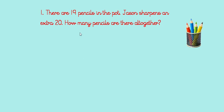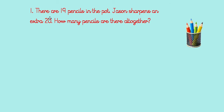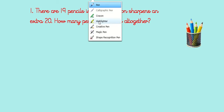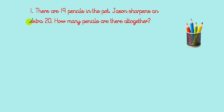I hope you found that all right. Let's look at question one together. There are 19 pencils in the pot. Jason sharpens an extra 20. How many pencils are there altogether? Did you spot some clues? I saw extra, that means more. And I saw altogether, so we're wanting to find a total. We're going to add 19 pencils that were in there to start with and our extra 20.